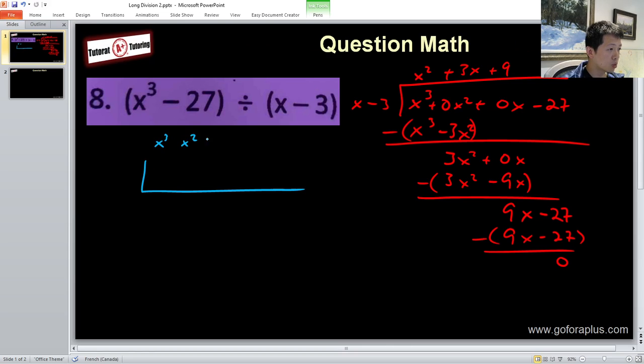So x cubed, x squared, x, and constant. I'll have 1, 0, 0, and minus 27. And the divisor will be the opposite sign of minus 3, which is 3.